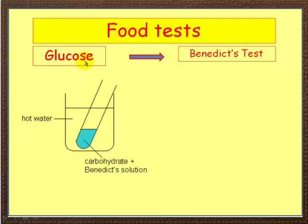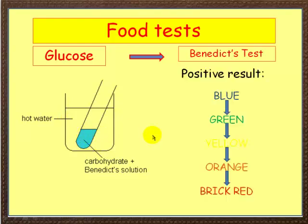First of all, how do we test for glucose? Glucose is called a reducing sugar and for that we use Benedict's test. To carry out the test, you have a boiling tube with the suspected carbohydrate and Benedict's reagent - Benedict's is blue. You can't heat this directly; you have to put it in a water bath. If there is glucose present, the solution will change from blue to green to yellow to orange and finally to brick red. A positive result: Benedict's will go from blue to brick red if glucose is present.